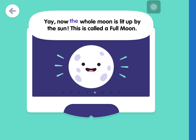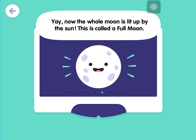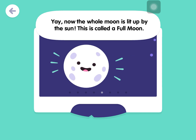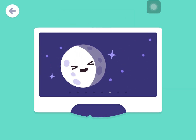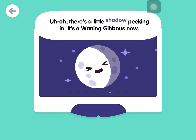Now the whole moon is lit up by the sun. This is called a full moon. There's a little shadow peeking in — it's a waning gibbous now.